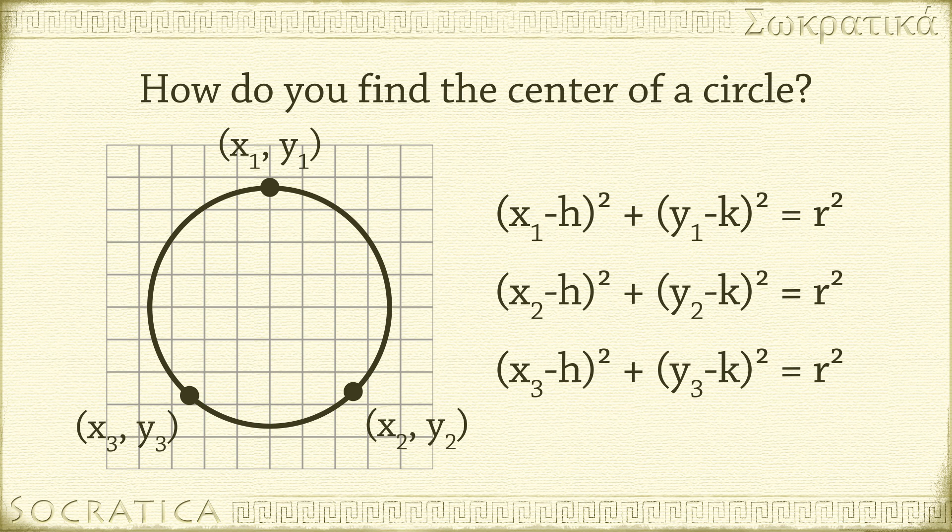Remember, x1, y1, x2, y2, and x3, y3 are not variables. They're numbers. Once you solve this system of equations for the unknown parameters h, k, and r, then you've found the center of the circle.